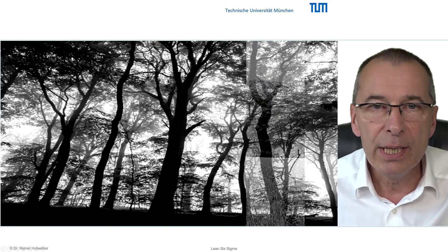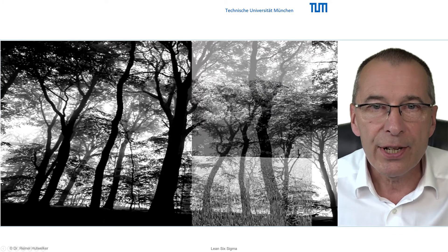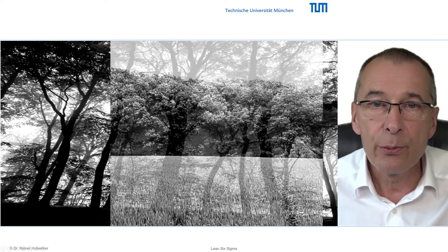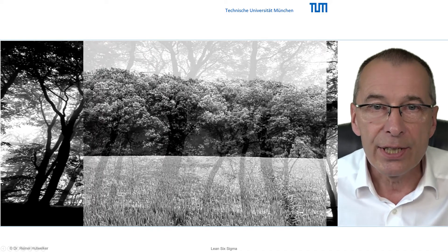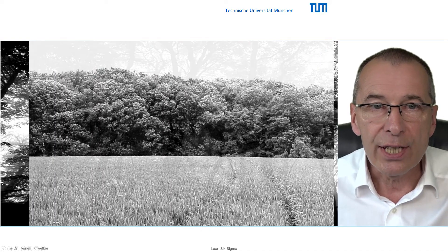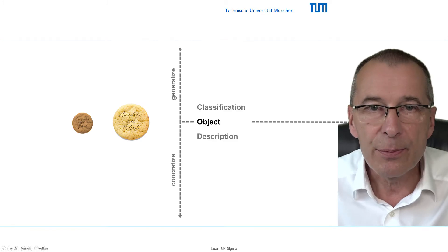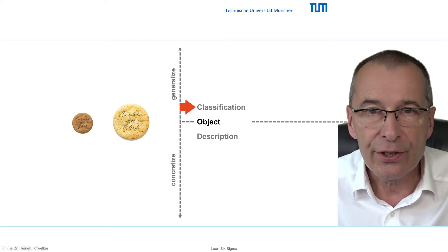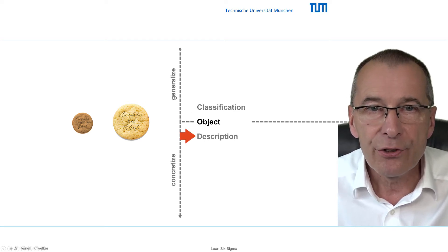In a familiar environment we sometimes fail to see the trees for the forest, and we assimilate deviations into the normal range. Scientific observation offers two principles to distinguish signals from noise: classification to generalize, and description to concretize objects for our observation.